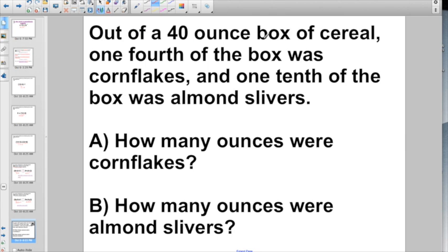Remember this: out of a 40-ounce box of cereal, one-fourth of the box was cornflakes, and one-tenth of the box was almond slivers. They might ask you, how many ounces were cornflakes? Well, we had a total box of 40 ounces. One-fourth of the box—how much was the box? The box was 40.